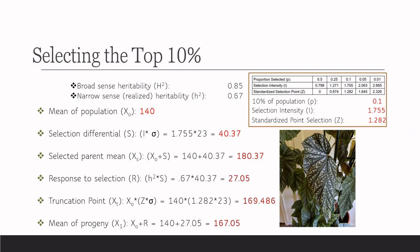Then the mean of our progeny is going to be our mean value, our original mean of population, plus the response to the selection. That's going to give us 167.05.